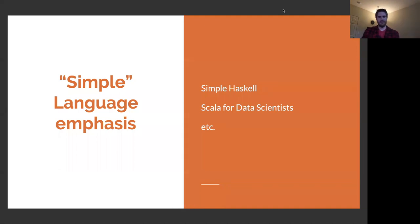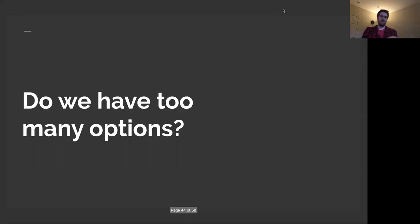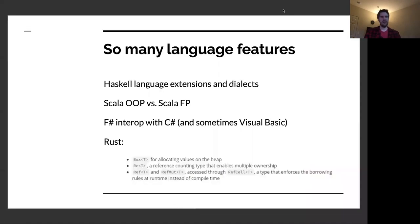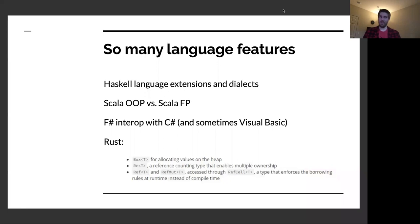Another interesting topic is simple language emphasis. There's an underlying question: do we have too many options? If we consider everything you could do in Haskell, Scala, F#, and Rust, there are a lot of features, and it can be overwhelming. F# and Rust in particular have managed to position themselves as sort of hiding some of the complexity. But we have a lot of options — great if you know what you're doing, but daunting if you don't.